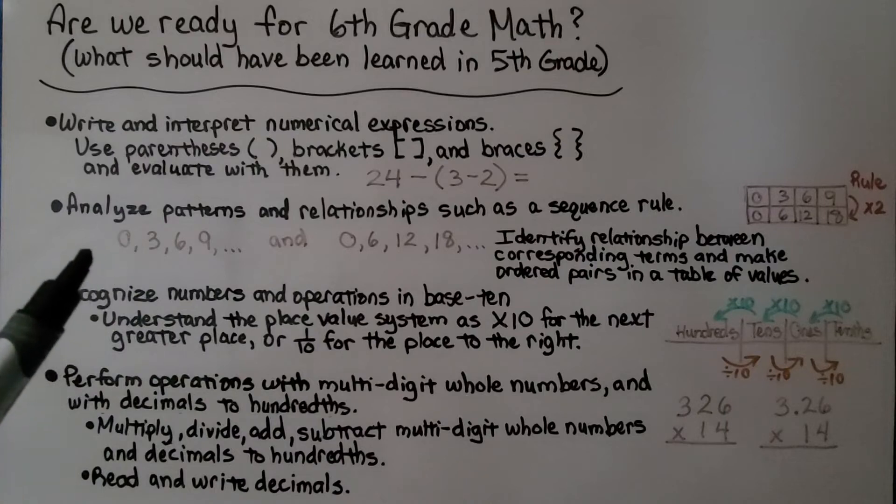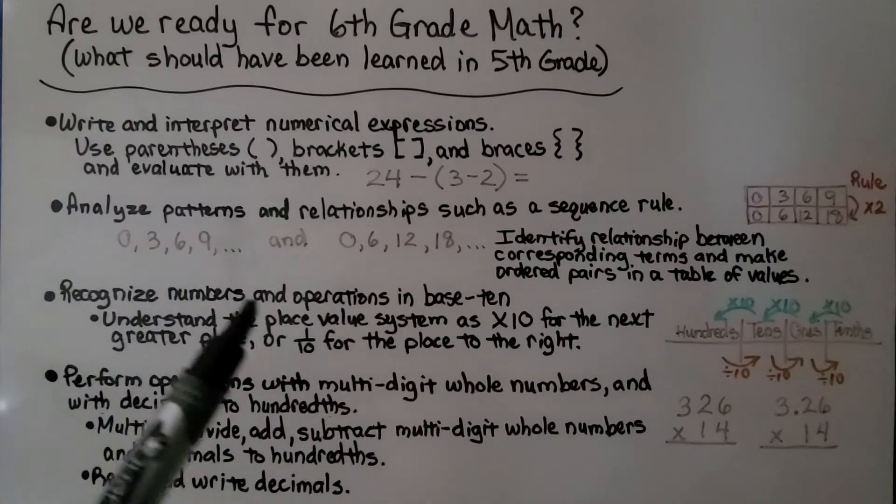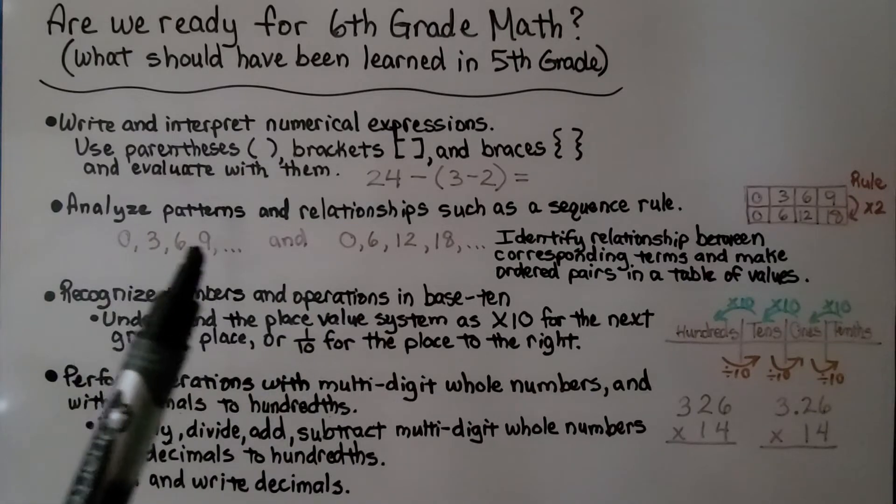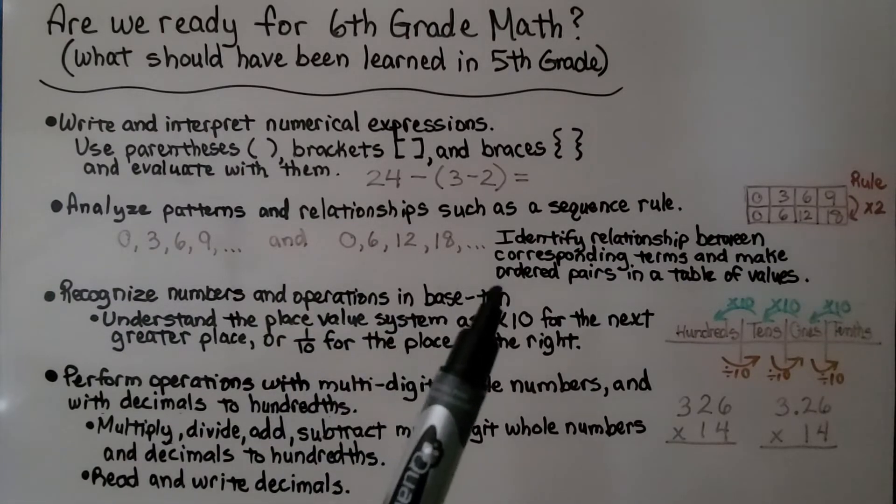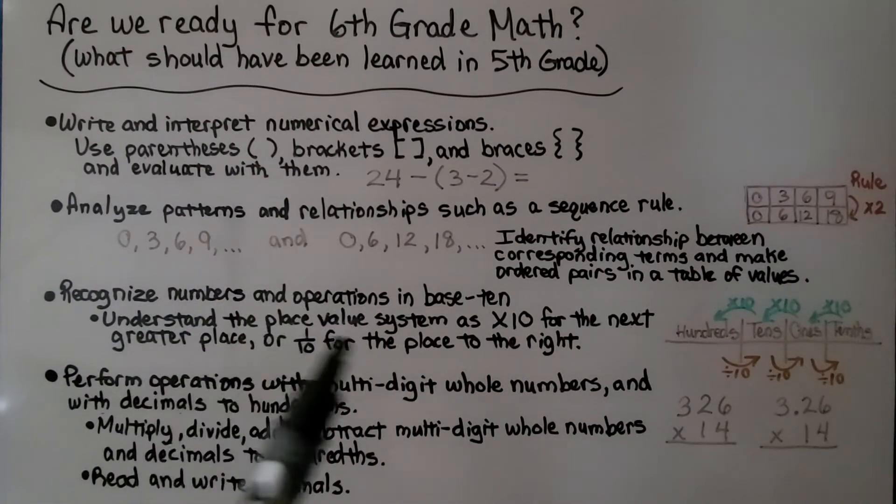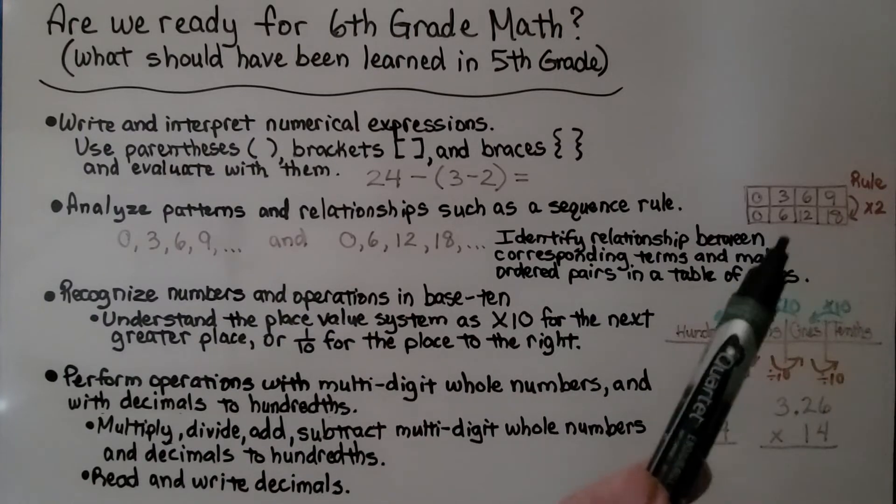You need to analyze patterns and relationships such as a sequence rule. Here we have a sequence here and a sequence here. Can you identify the relationship between the corresponding terms and make ordered pairs in a table of values?